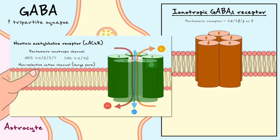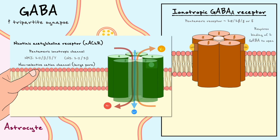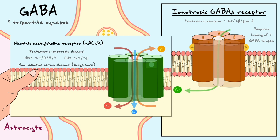To open GABA-A channels, there are two binding sites between the alpha and beta subunits that, upon GABA binding, open the pore. When the pore opens, the receptor conducts chloride inside the cell. An important structural difference from the nicotinic acetylcholine receptor — which had negatively charged acidic residues near the pore — is that the GABA-A receptor has positively charged basic residues, making the channel selective for anions like chloride instead of cations.